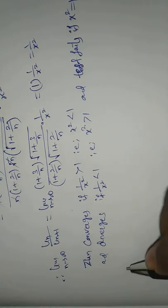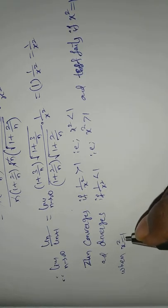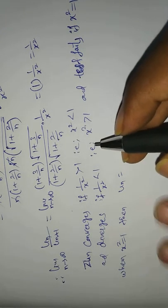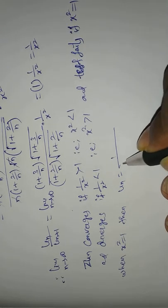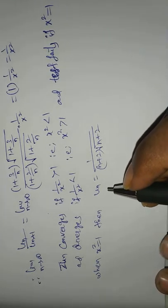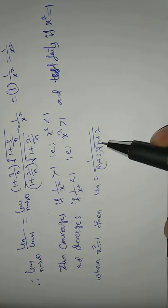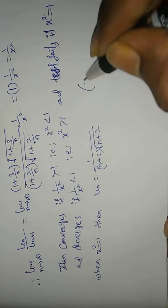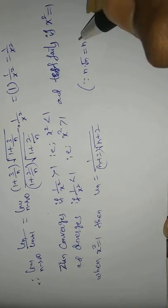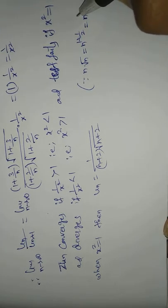When x² = 1, U_n equals 1 divided by (n+2)·√(n+2). By comparison, n·√n equals n^(1/2 + 1) = n^(3/2). So U_n behaves like 1/n^(3/2) for large n.